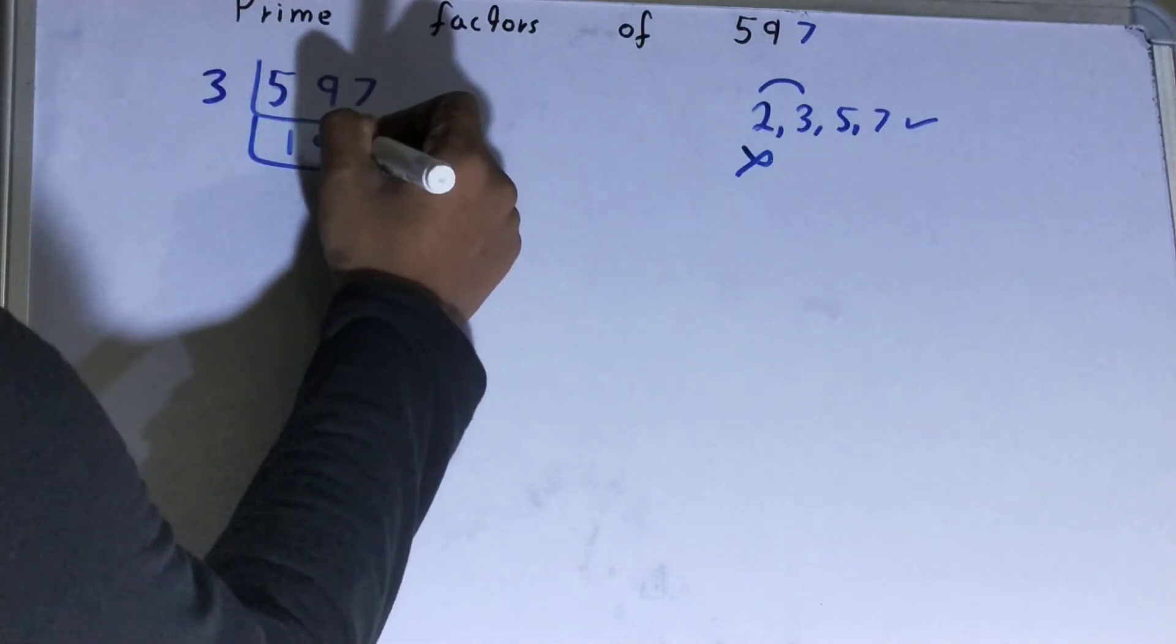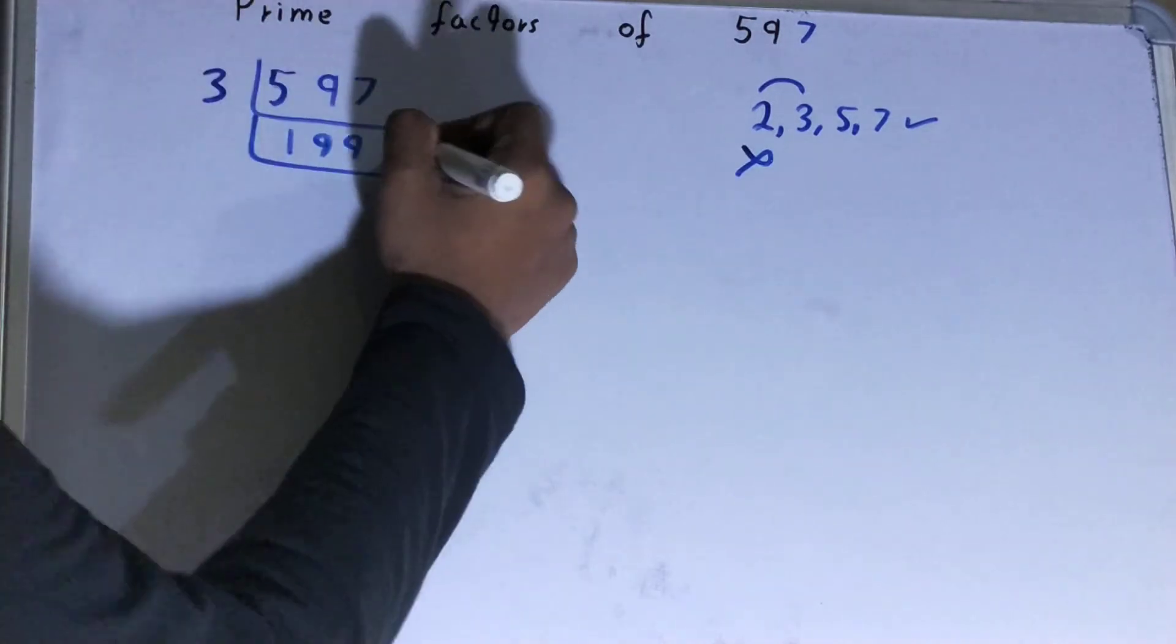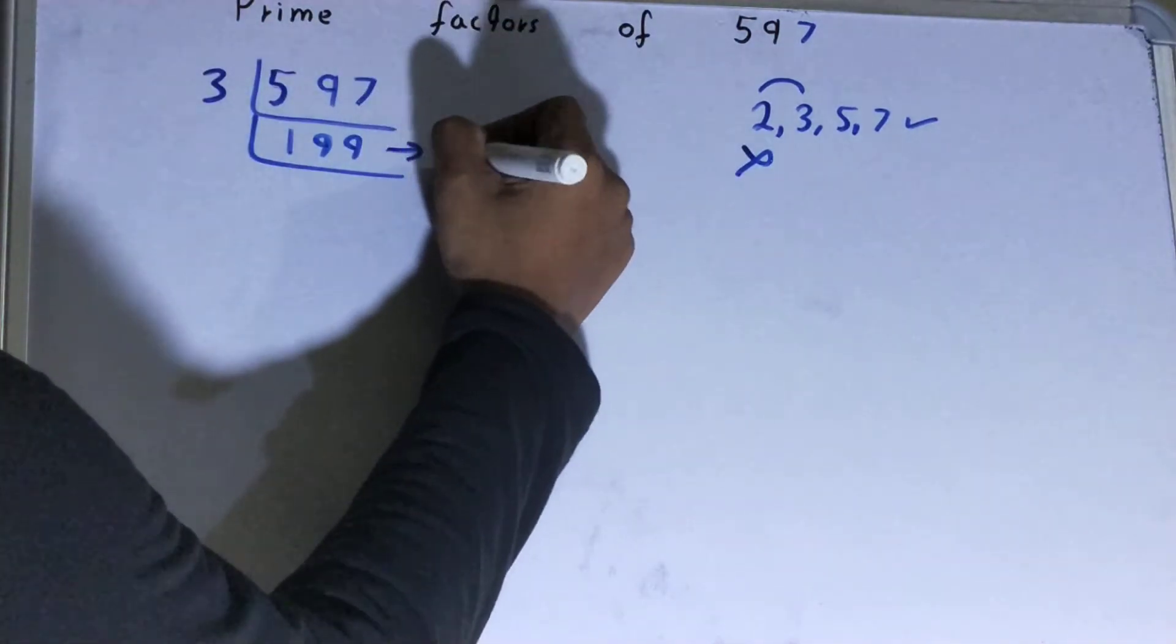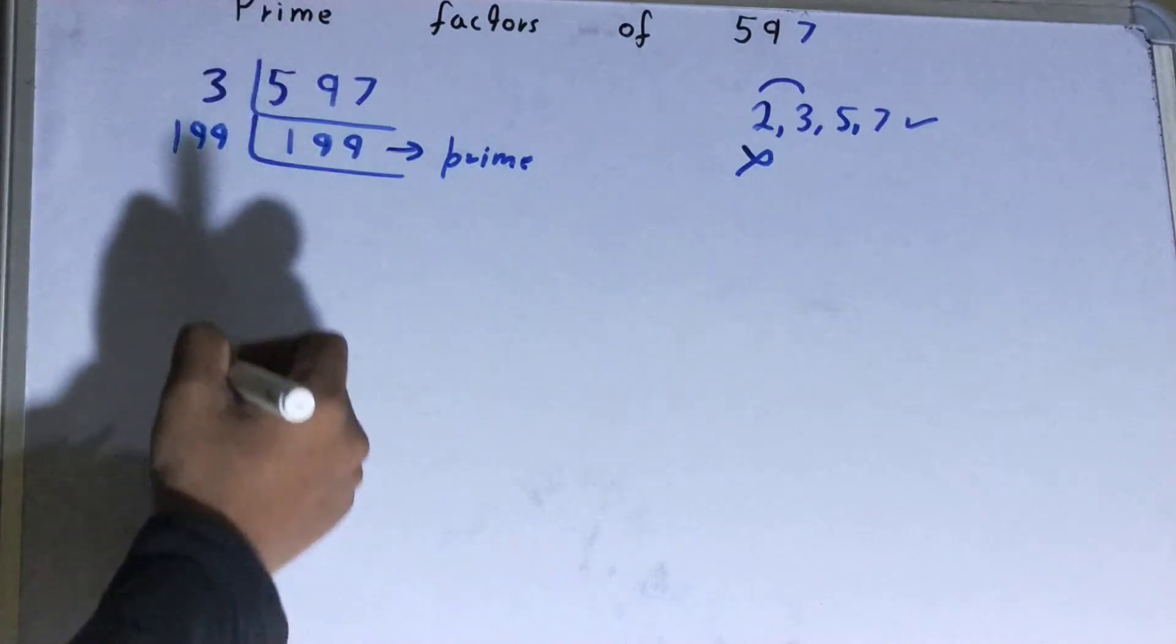3 times 9 is 27, so you will be left with 199. Now this 199 is further not divisible by 3, and it is also a prime number, so it is only divisible by itself. And when you will do so, you will be getting one.